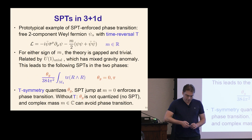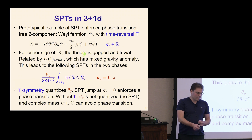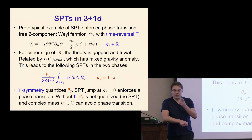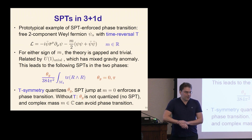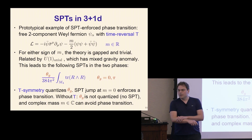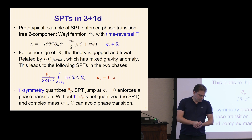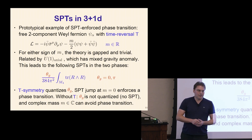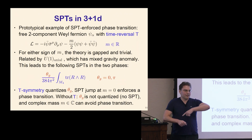Consider a free Weyl fermion in four dimensions — a two-component fermion ψ_α, not a Dirac fermion. Here's the free Lagrangian and the mass M, which is in principle complex. The time-reversal-invariant locus is where M is real, and time reversal or parity will play a very important role. For either sign of the mass, the theory is gapped and completely trivial, and the two signs are related by an anomalous axial symmetry rotation.